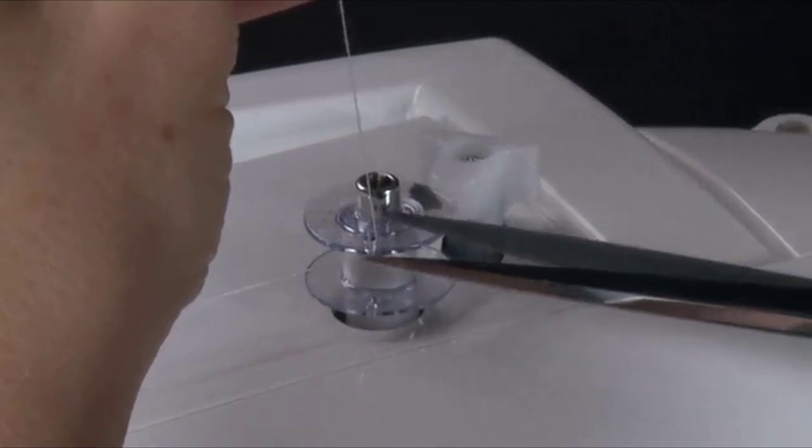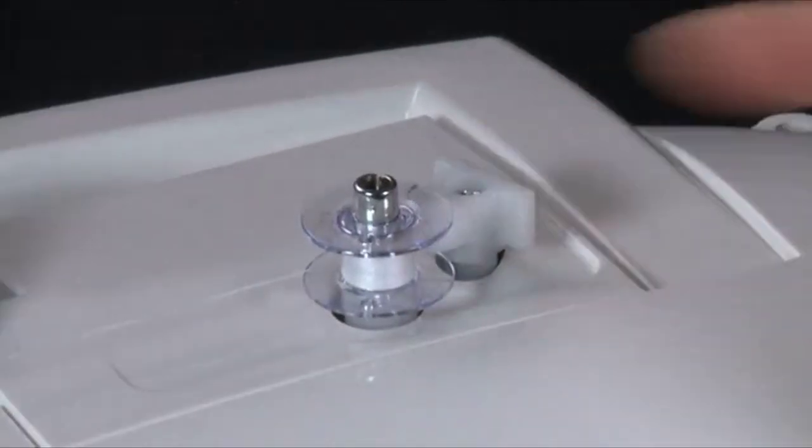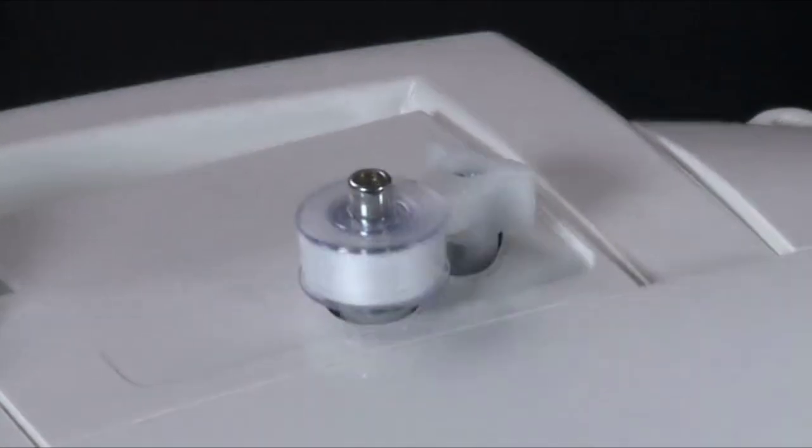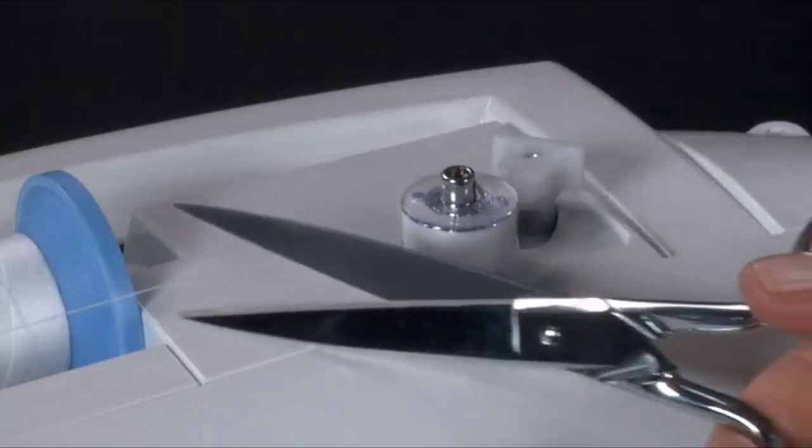If you wish, you can push the bobbin winder back to stop and trim the thread tail, then push it against the bobbin again to resume filling. When the bobbin is full, the bobbin winder lever will move back and the winding will stop automatically. Remove the bobbin and cut the thread.